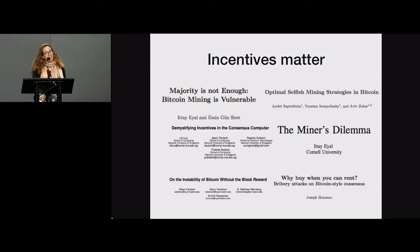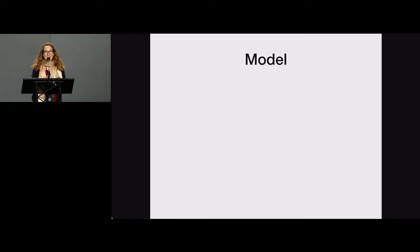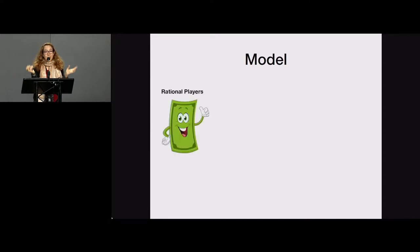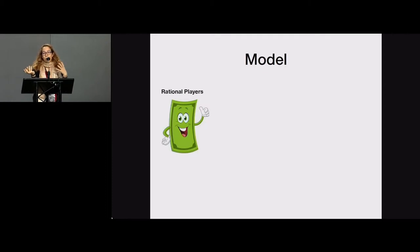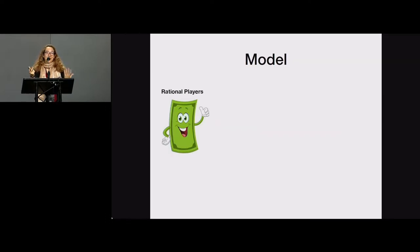So how can we fix that? We need an appropriate model that considers rational players. In game theory we only consider rational players, but traditionally in distributed or cryptographic systems, rational players are not really considered. When talking about cryptocurrencies, people are usually motivated by financial gain, so it's very important to consider rational players just like we do in game theory.